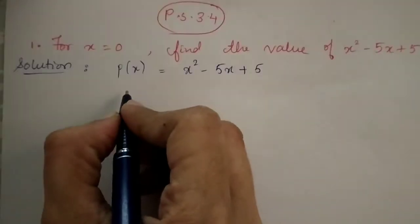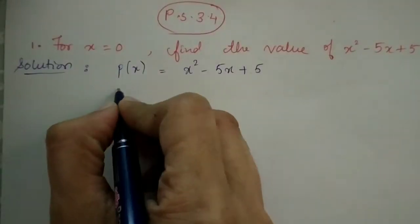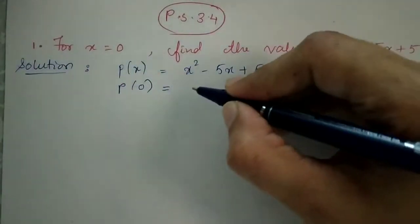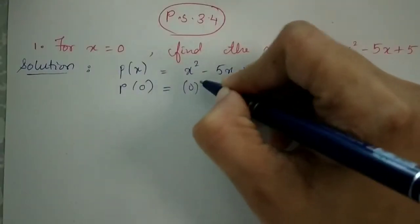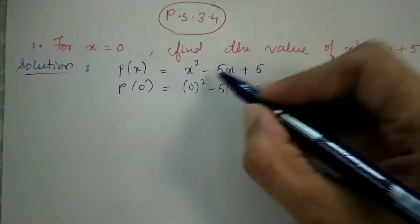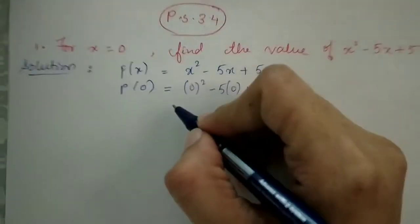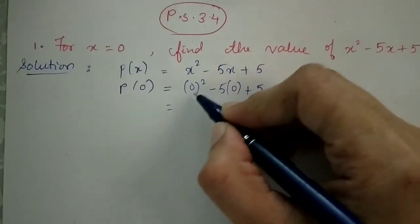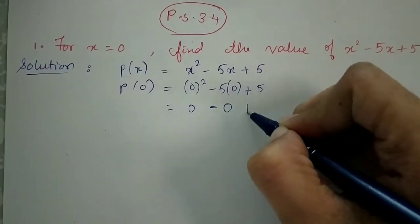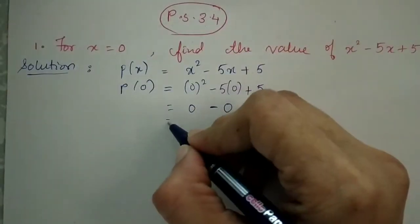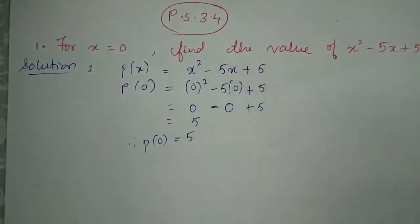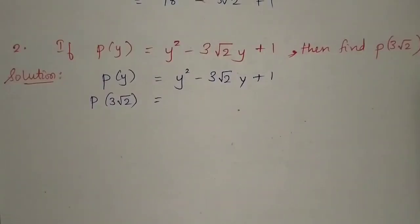Since we need to find p(0), we substitute 0 in place of x everywhere: 0 squared minus 5 times 0 plus 5. The square of 0 is 0, and 5 times 0 is 0, so we get 0 minus 0 plus 5. Therefore, p(0) equals 5.